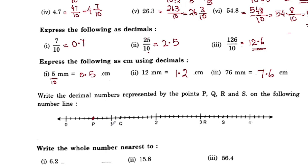Now we have to write the decimal numbers. P is at 0.1, 0.2, 0.3, 0.4, 0.5, 0.6. So P is 0.6.